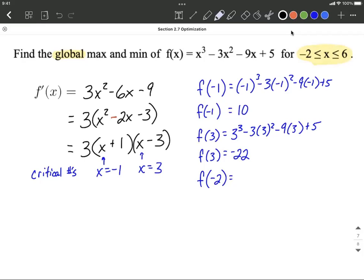Negative 2 as we replace each one of the x's again in our original function and work this all the way down. We get f of negative 2 works out to be 3.